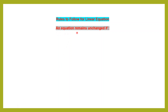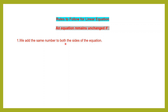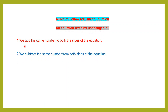An equation remains unchanged if we add the same number to both sides of the equation. In an equation you have a left-hand side and a right-hand side. If you add the same number to both sides, the equation remains unchanged. Similarly, if you subtract the same number from both sides of the equation, the equation remains unchanged.